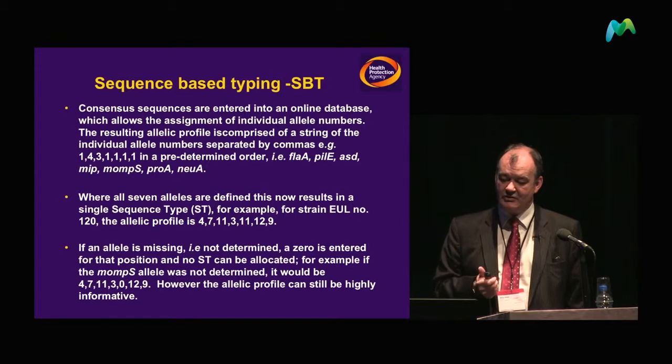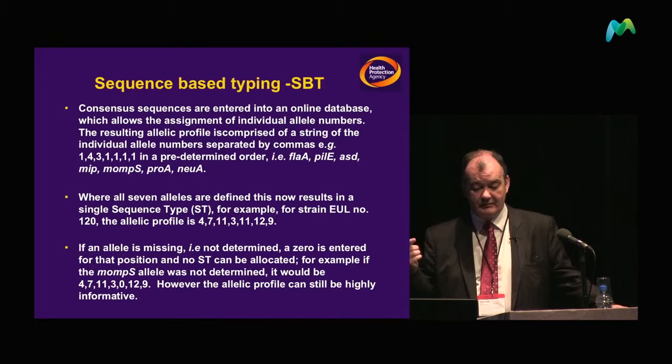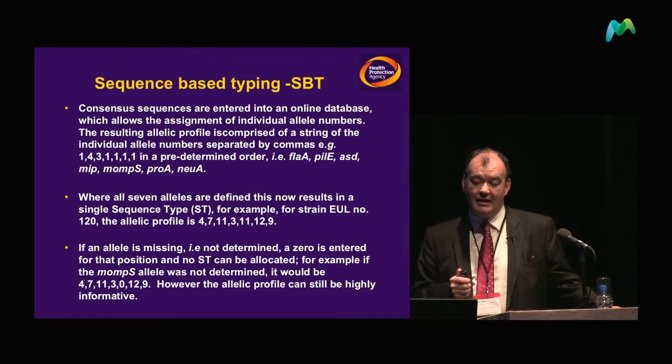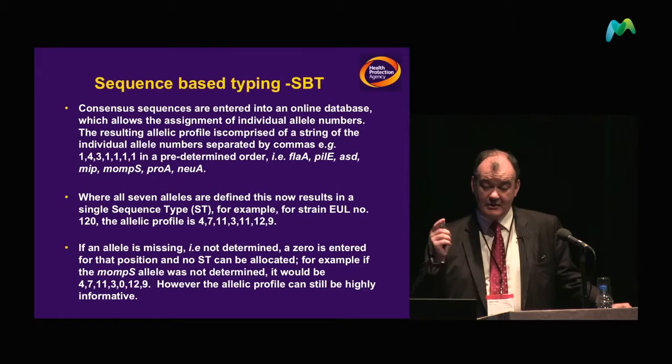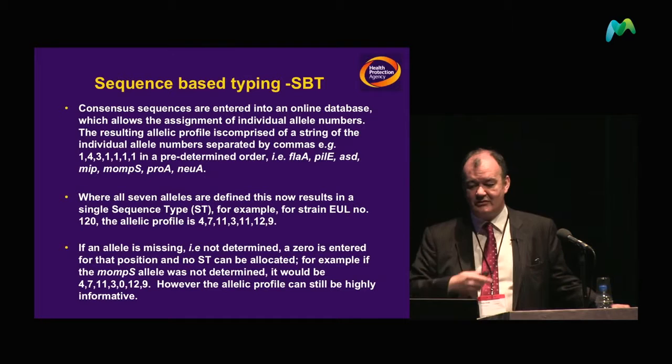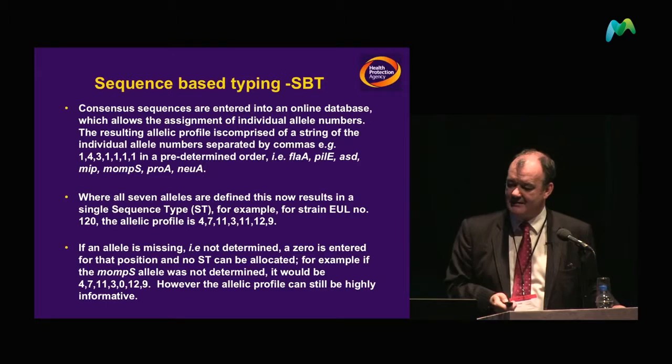Using a combination of these seven genes, we can identify strings of individual allele numbers. We then have an SBT — a sequence-based type — which appears fairly unique and allows us to do accurate profiling and mapping across human strains to environmental strains. This is all in the pack, and I don't intend to go into a lot of detail — I just want to raise it in your consciousness.